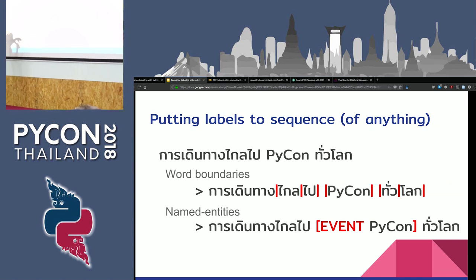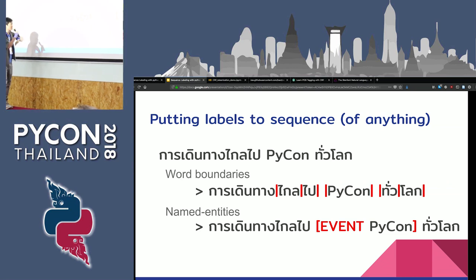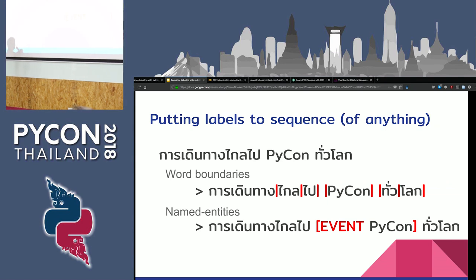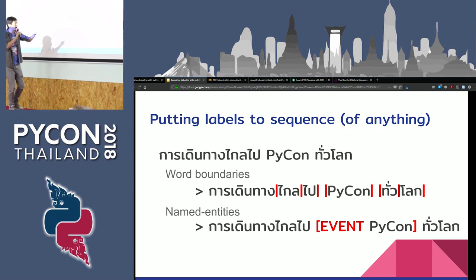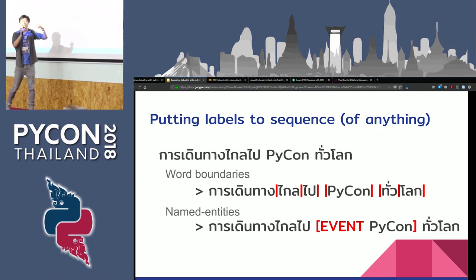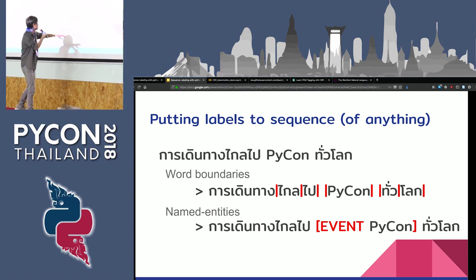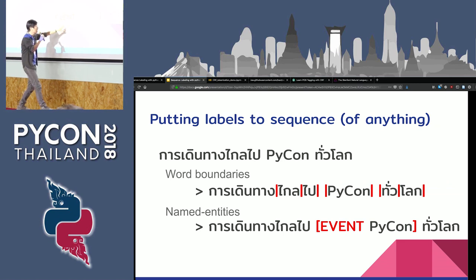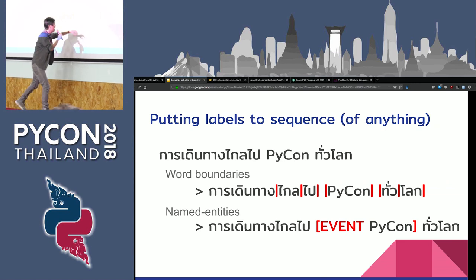Or you can have another kind of label — in NLP we call it named entities. So for example, you have a sentence like 'a long journey, probably to PyCon, everywhere in the world, something like that.' And you'd like to mark 'PyCon' as an event.